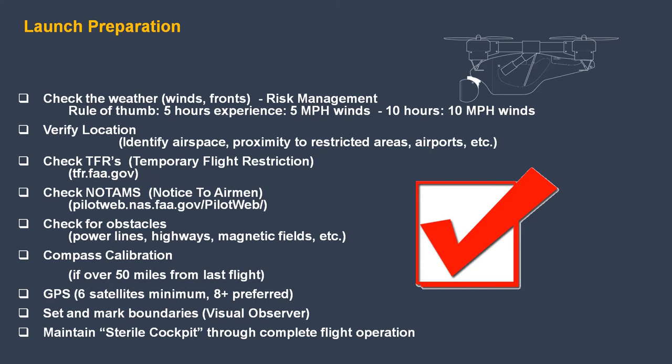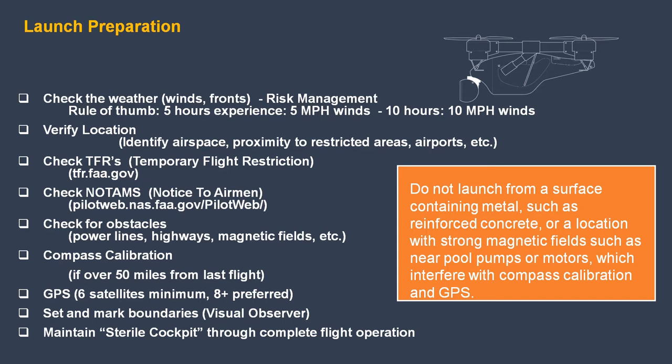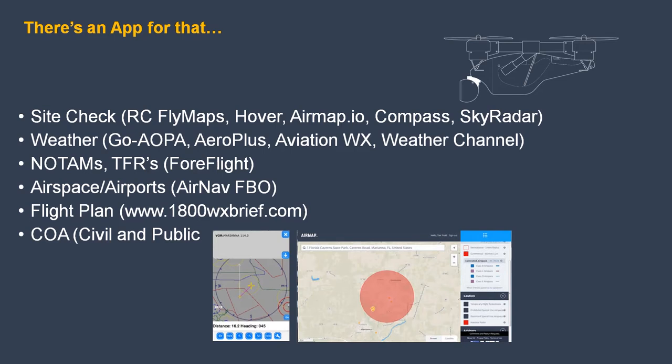Check your compass calibration — if you're over 50 miles from the last flight, you might need to recheck. GPS: 6 satellites is the usual minimum, 8 is preferred. Set and mark the boundaries with your visual observer. Maintain a sterile cockpit throughout the complete flight operation. Beware of metal under the launch point, like concrete with rebar. Do not launch from a surface containing metal such as reinforced concrete, or a location with strong magnetic fields such as near pool pumps or motors. Instead, use a metal-free, dust-free location or a launching pad, which can be as simple as a piece of cardboard, yoga mat, or car floor mat.